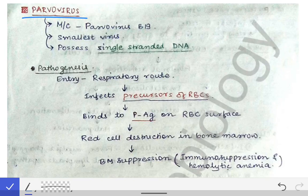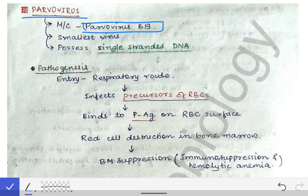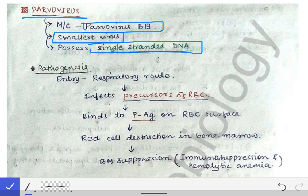Now we will talk about the parvoviruses. The most common parvovirus causing infections is parvovirus B19. From a microbiology point of view, parvoviruses are the smallest viruses of all, and they possess single-stranded DNA. While all other DNA viruses are double-stranded, parvovirus contains single-stranded DNA. These two points — smallest virus and single-stranded DNA — should be kept in mind.